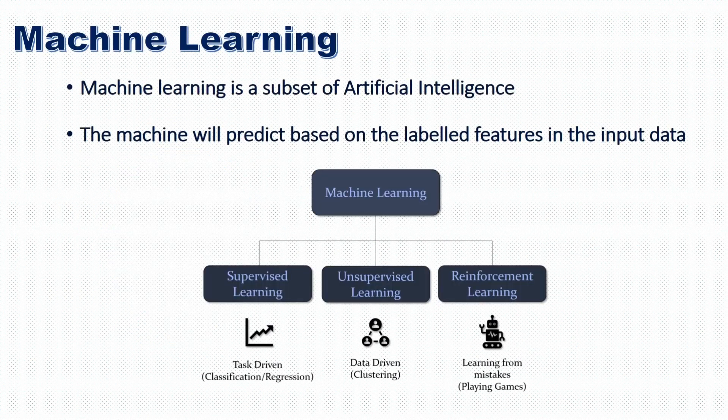Machine learning is a subset of artificial intelligence. In machine learning, we give data with various features to the machine learning algorithm, and based on the features, we will assign a result. With the help of this, the algorithm will understand and later on, when we give input, it will predict based on previous experience.